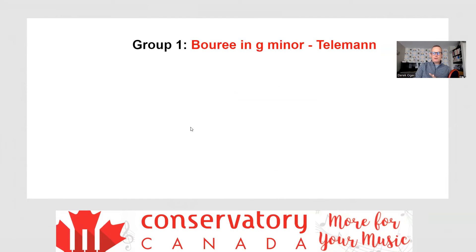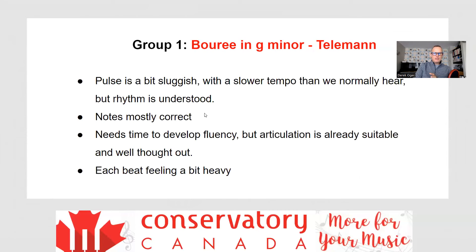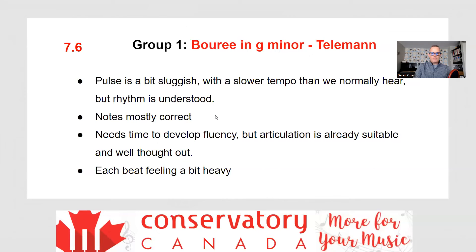The fourth piece went back to Baroque — the Bourree in G minor by Telemann. It's a bit sluggish overall with a slower tempo than we would normally hear, but the rhythm is understood: he understands the difference between eighth notes and quarter notes. Even though the pulse is almost steady, it's just a little too slow for what we would normally want to hear. Notes are mostly correct. Interestingly, the articulation is already suitable and well thought out — he's coached very well in terms of how Baroque music goes. Separate bows denote detached quarter notes in the right hand, and that was well thought out already. Each beat just feels a bit heavy; it needs more time to work up that tempo. So we kept this mark in the 70s — 7.6 out of 10 for this piece, but very close to scoring in the 80s. Once he is in the 80s, he'd probably already be in the mid-80s because the articulation is already understood.